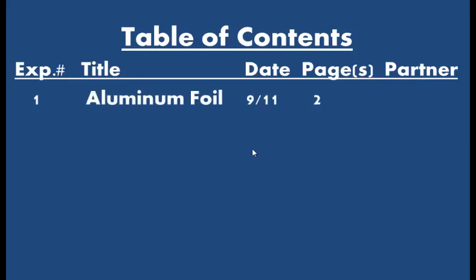For this lab, the very first lab we're doing today in class, it's experiment number one. The title is aluminum foil. The date is 9-11. And page, you're going to start on page two. You may go to page three depending on how big you write. You don't know who your partner is yet. We'll figure that out in class tomorrow when we do the lab.